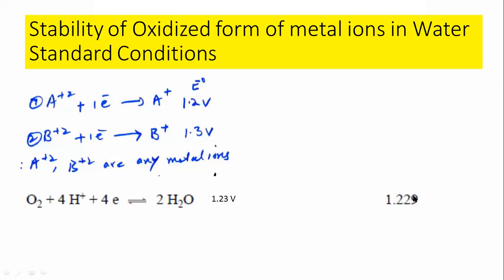The correct answer is this half cell. You are going to consider the stability or reactivity of these metal ions, and it should be counter-reacted with water. You cannot consider the half cell having minus 0.83 V, because that water and those metal ions are both in the oxidized form — they cannot react with each other. So this is the correct half cell to consider.